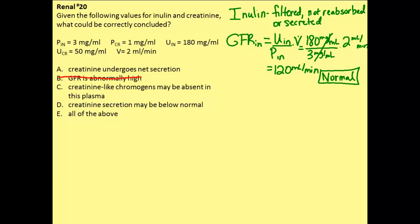Now we have to compare this to creatinine. Creatinine is a substance that's a bit easier to use because it's already present in the body — it's a breakdown product of creatine phosphate. So you can use it as an indicator of GFR without injecting anything into the patient, making it a simpler test, though it's not as reliable as inulin.